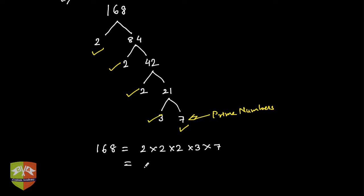So this is 2 to the power 3 into 3 to the power 1 into 7 to the power 1. In fact, if you generalize it, all the prime numbers can be used to represent 168. How and why do I say this? Because 168 could be written as 2^3 × 3^1 × 7^1 times what are missing.